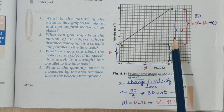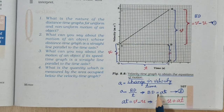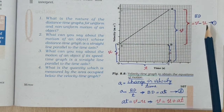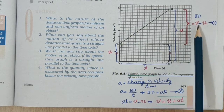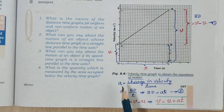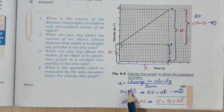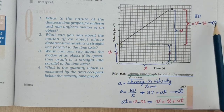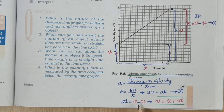We know that acceleration is the change in velocity divided by time. The change in velocity is BD, so BD divided by time gives acceleration. Therefore BD = a × t. From the graph, BD = v − u. Substituting this: v − u = at, which gives us v = u + at. This is the first equation of motion — the velocity-time relation.